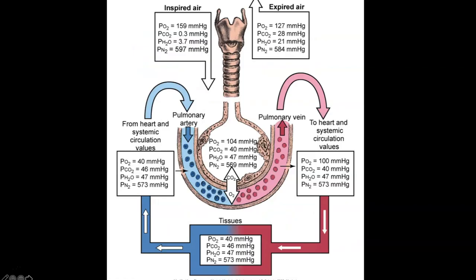Let's follow oxygen through the entire body. We start with inspired air at a PO2 of about 159. It gets down into the alveoli, and by the time it hits the actual alveolus it's at about 104. By the time it gets into the bloodstream, it drops a little more to about 100, giving us a PO2 of 100 in the pulmonary vein going to the heart. When it gets down to the tissues, a considerable amount of that oxygen is used, and we end up with a PO2 of 40 on the other end of tissue consumption. That PO2 of 40 then returns to the heart and back to the lungs, receives more oxygen, and goes back up to 100.